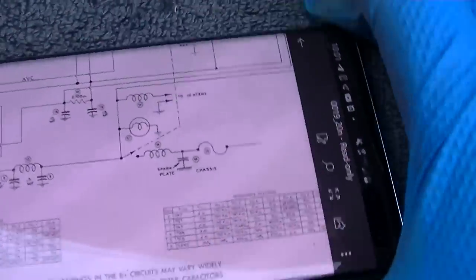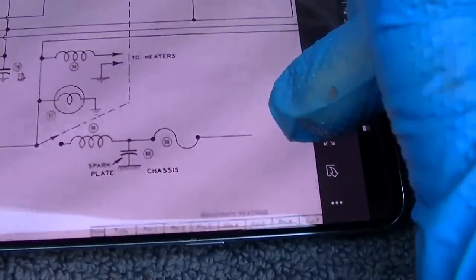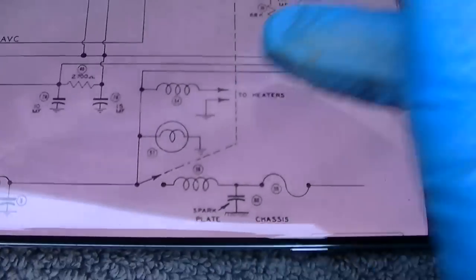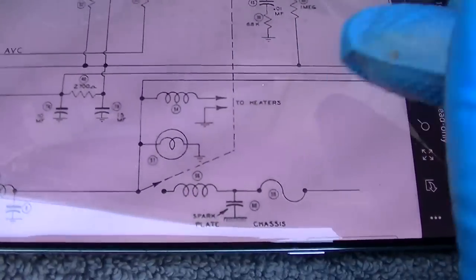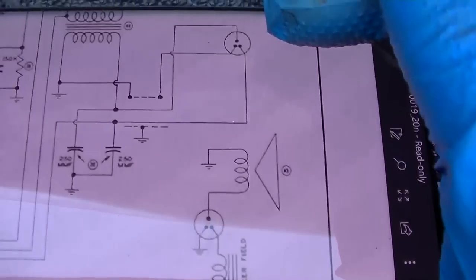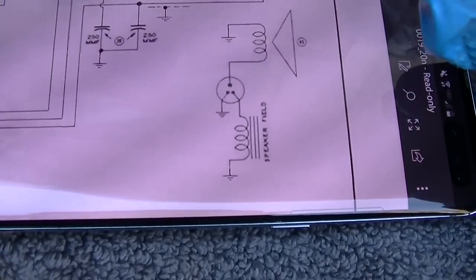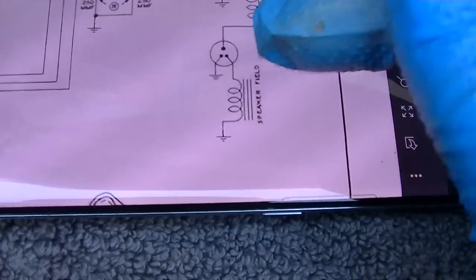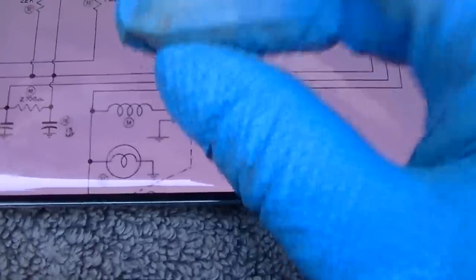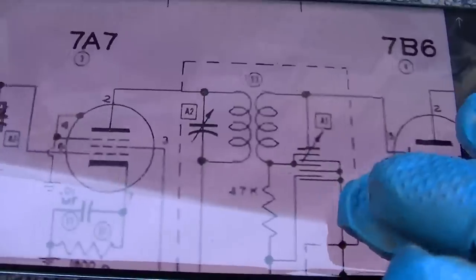He said it was 12 volts positive ground. I don't know about that because if you look at this, you have your incoming power through a choke, then your power switch, then it comes to your lamp here, then to your heaters. It also comes over here to this point, and this is a field coil speaker.